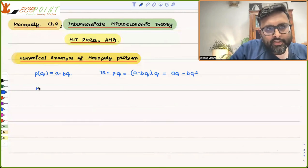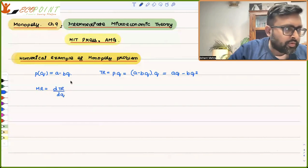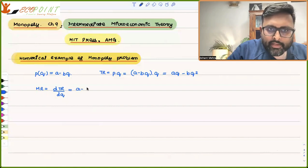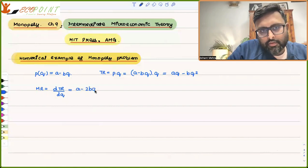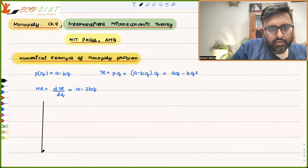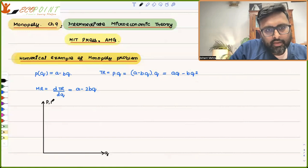What is the MR? MR is dTR/dQ. So what do you get? A - 2BQ. Let us put this here — you have the MR.